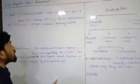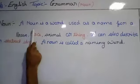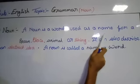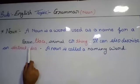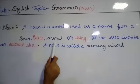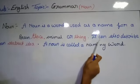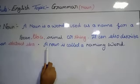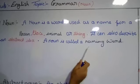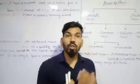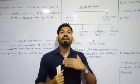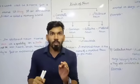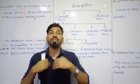Here we have a definition of noun. A noun is a word used as a name for a person, place, animal or thing. It can also describe an abstract idea. A noun is called a naming word. Whenever we are talking about the noun, just keep in mind that noun is a naming word.